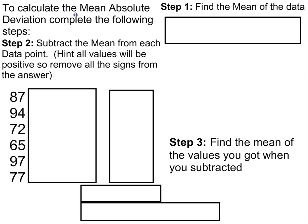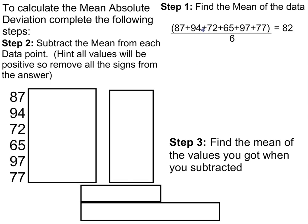To find mean absolute deviation, the first step is to find the mean of the data. So we have our data set: 87, 94, 72, 65, 97, and 73. The first thing we're going to do is find the mean of that data by adding all those numbers up and dividing it by 6. So the mean of that data is 82.